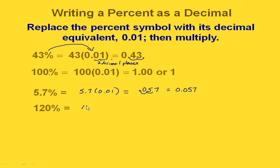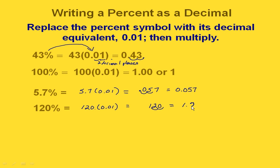And if we start out with 120%, for a whole number our decimal point is after the ones digit. So we're starting there and moving it over to the left two places, and it's going to end up between the one and the two. So in decimal form, 120% would be 1 and 20 hundredths.